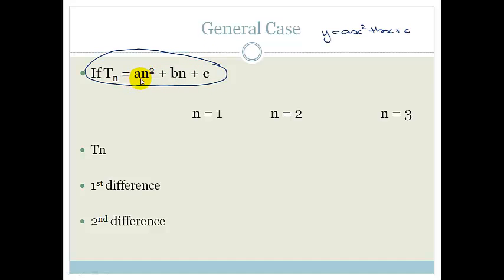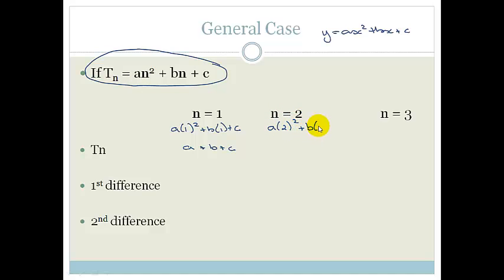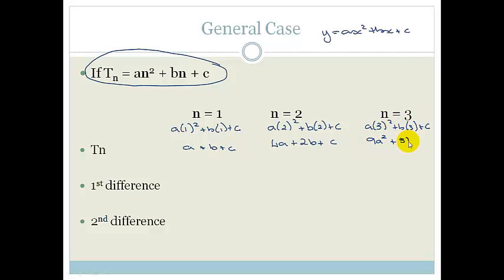If I substitute term 1 into this, it becomes a times 1 squared plus b times 1 plus c, which gives a plus b plus c. If I substitute 2 into n, I get a times 2 squared plus b times 2 plus c, which becomes 4a plus 2b plus c. And substituting 3 gives a times 3 squared plus b times 3 plus c, which becomes 9a plus 3b plus c.